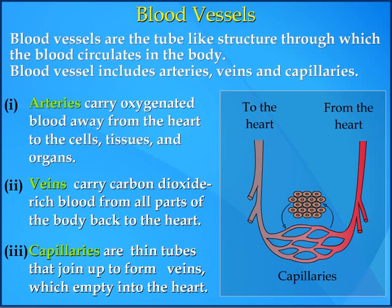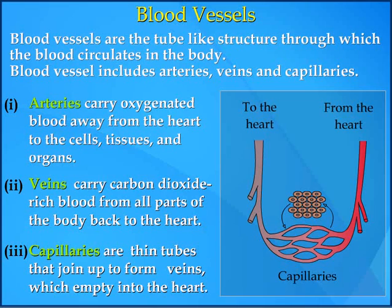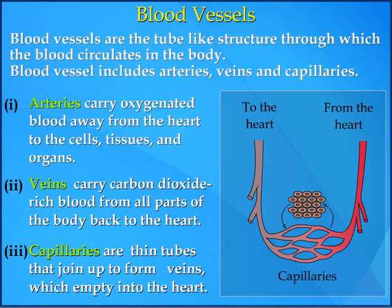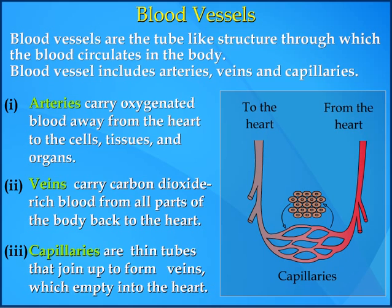1. Arteries carry oxygenated blood away from the heart to the cells, tissues, and organs. 2. Veins carry carbon dioxide-rich blood from all parts of the body back to the heart. 3. Capillaries are thin tubes that join up to form veins, which empty into the heart.